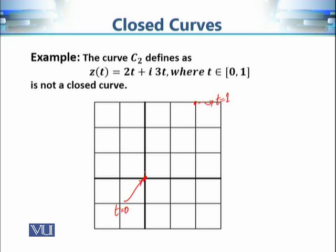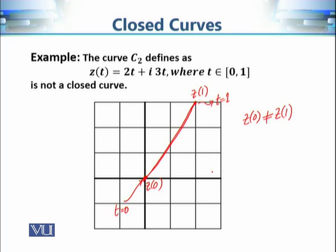Since 2t and 3t are both continuous functions of t, there is no break when traveling from t = 0 to t = 1. Joining all points gives a line segment. Since z(0) = 0 is not equal to z(1) = 2 + 3i, we can say it is not a closed curve.